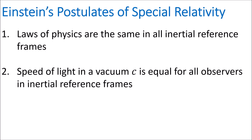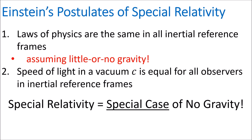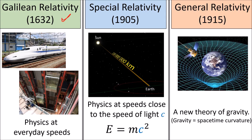So when we say that the laws of physics are the same in all inertial reference frames in special relativity, this is assuming that there is little or no gravity. The reason we call it special relativity is because it only works in the special case of no gravity. In order to get a more general theory of relativity that includes gravity, we need general relativity. So we've covered Galilean relativity and special relativity. In the next video, we'll focus on the final theory of relativity, general relativity, which is a theory of gravity.